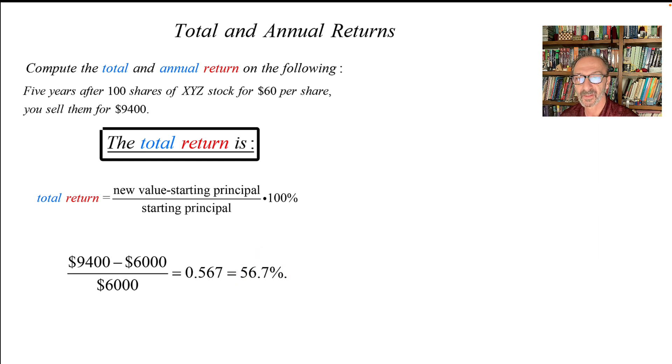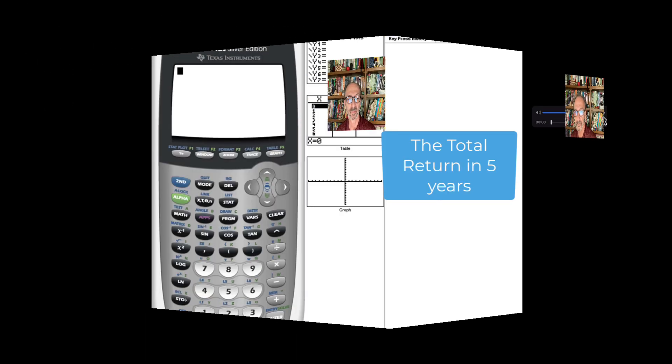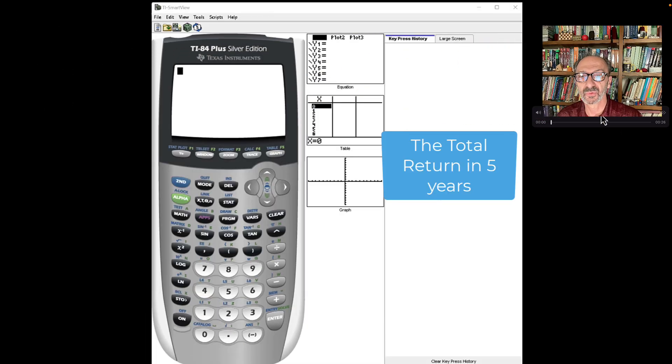That's the total return, so you are earning or making 56.7 percent return on your investment. To compute the total return, we could use a graphing calculator, and we usually use parenthesis to be on the same side.